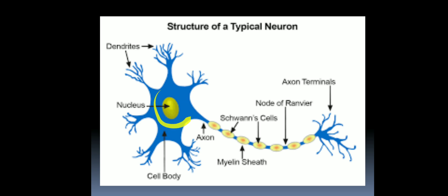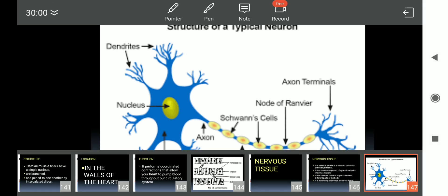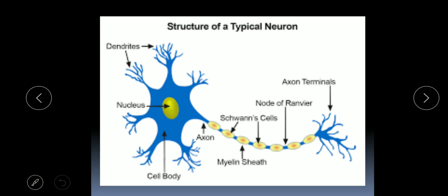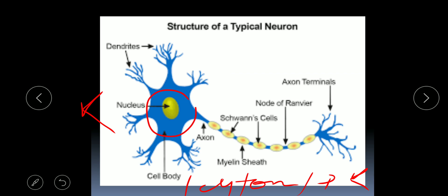The central part of the neuron is known as the cyton, cell body, or pericaryon. The reason it is called pericaryon is that the nucleus is also known as 'karyon' in Latin, and the cyton surrounds the nucleus — hence the name pericaryon, or cell body.